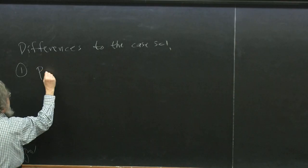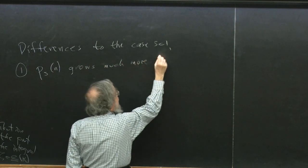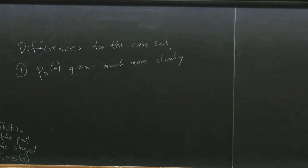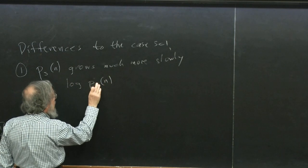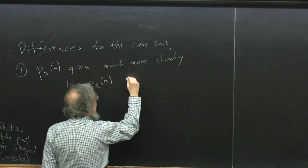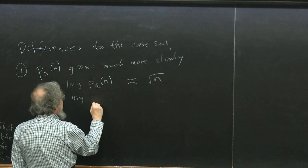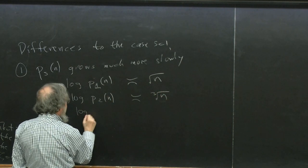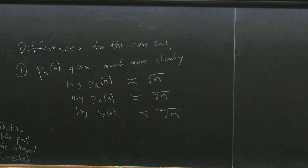I'll concentrate on s=2 and emphasize the differences from the case s=1. I'll have five numbered points for today. The first difference is that p_s(n) grows much more slowly. For usual partitions p_1(n), the log grows like the square root of n; for p_2(n) it's of the order of the cube root of n; and in general for any s it's of the order of the (s+1)-th root of n.